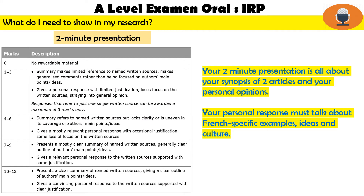The mark scheme is quite long. The first 12 marks are just for the quality of your two-minute presentation. Everyone watching should be aiming for the 10 to 12 box — this is the bit of the exam you can work hard on, learn off by heart, and come in prepared. To do this well, you need to give a synopsis — an overview of two articles — and briefly give your personal opinion. You must talk about French-specific or Spanish-specific examples, ideas and culture. Show you've understood the articles, show the main arguments, and tell us your personal response convincingly without going into too much detail.